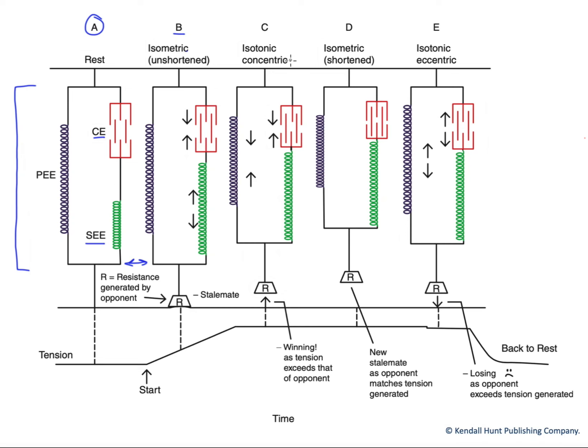Now, after that, our wrestlers are going to begin to win here in C. And what happens is the tension being generated here is now enough to overcome the resistance down here that our opponent is generating. And so the whole muscle will shorten. That's referred to as isotonic concentric. We're generating the same amount of tension, but now we're winning. And so our muscle is shortening. That's a concentric contraction.